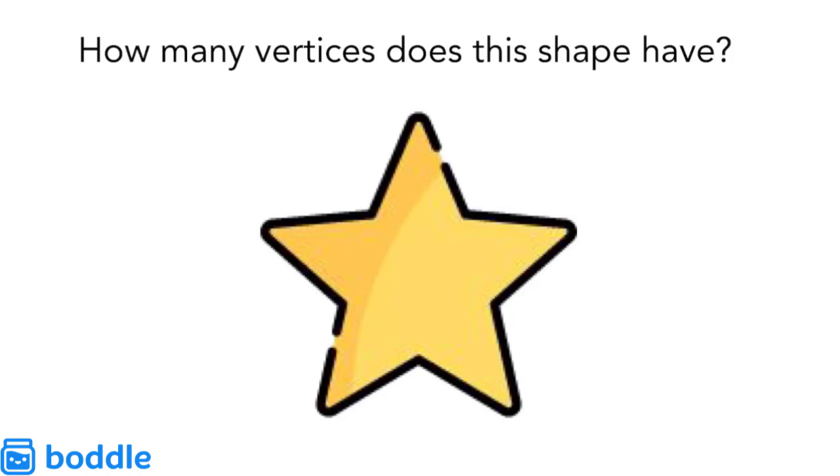How many vertices does this shape have? A vertex is where two of the sides come together and make a point. Let's count all the places where the sides come together on this star.